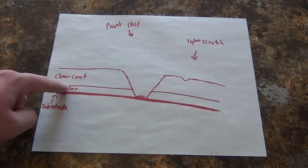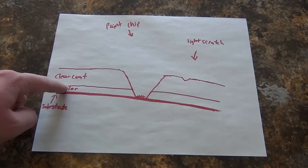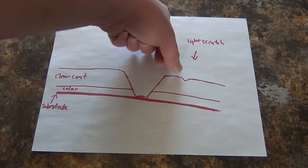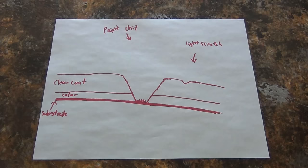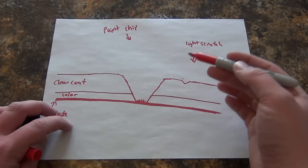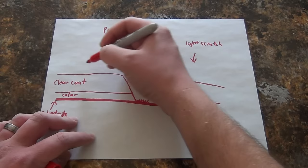Now, a light scratch would look something like this, where there's just a nick in the clear coat. And when the light hits it, it goes in and bounces around all over the place before it shoots back out. That's what makes the scratch visible. Because if you don't have a scratch, like we do over here, the light hits it and then bounces right off.